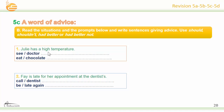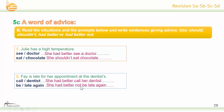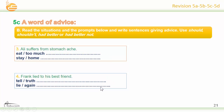Number one: She had better see a doctor. She shouldn't eat chocolate. Number two: She had better call her dentist. She had better not be late again. Number three: He shouldn't eat too much. He had better stay at home. Number four: He should tell the truth. He shouldn't lie again.